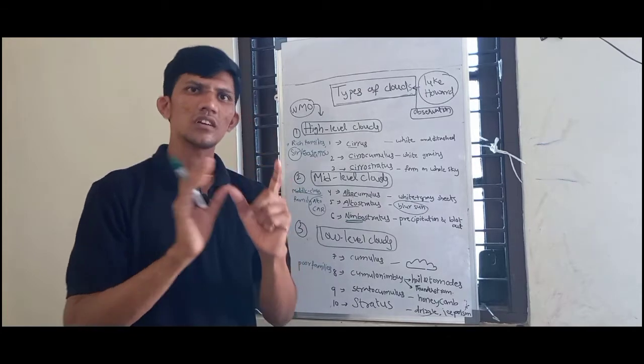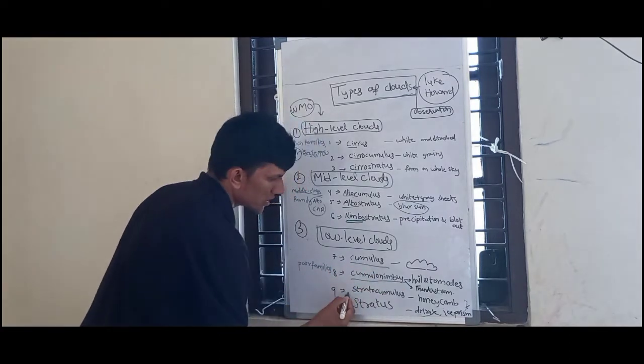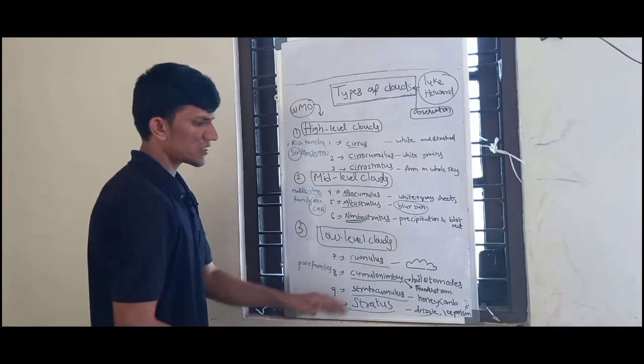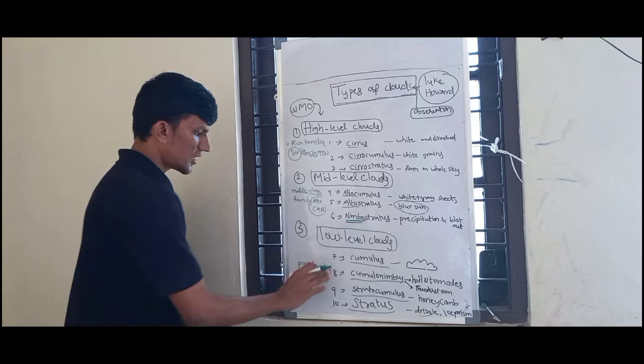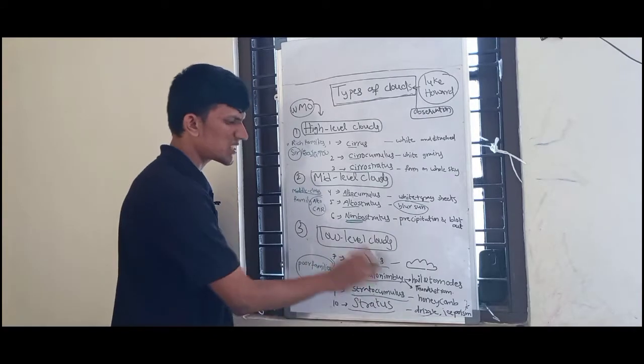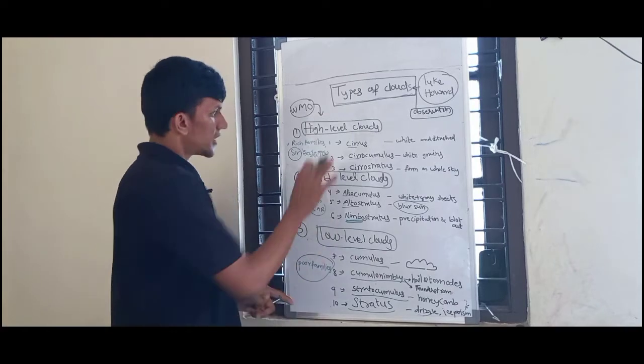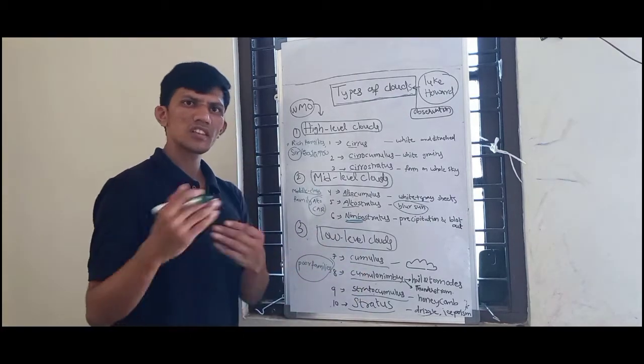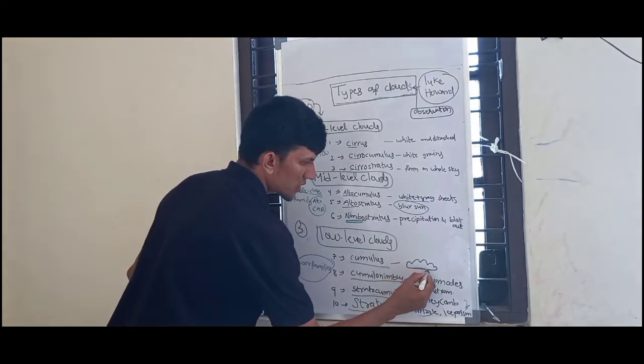So low level clouds: cumulus, cumulonimbus, stratocumulus, stratus. These clouds are low level clouds. I'm just looking for poor families for this time. If you try, this is easy to get - the two low level clouds. This is the elimination method.